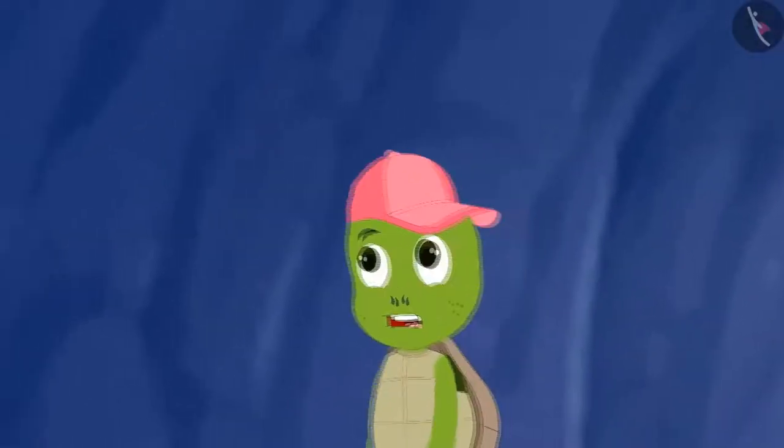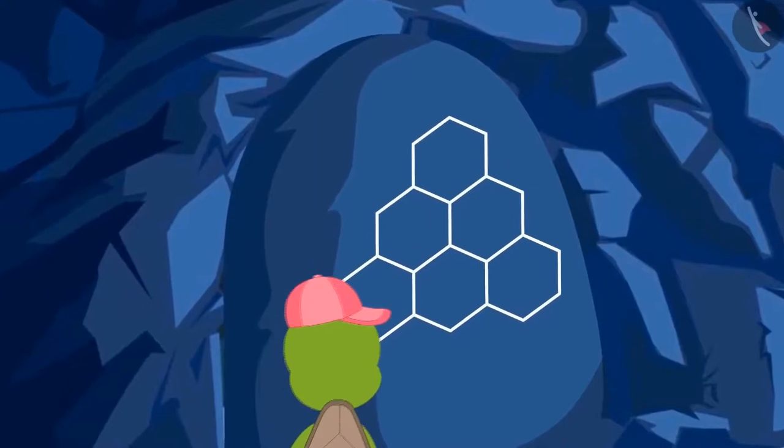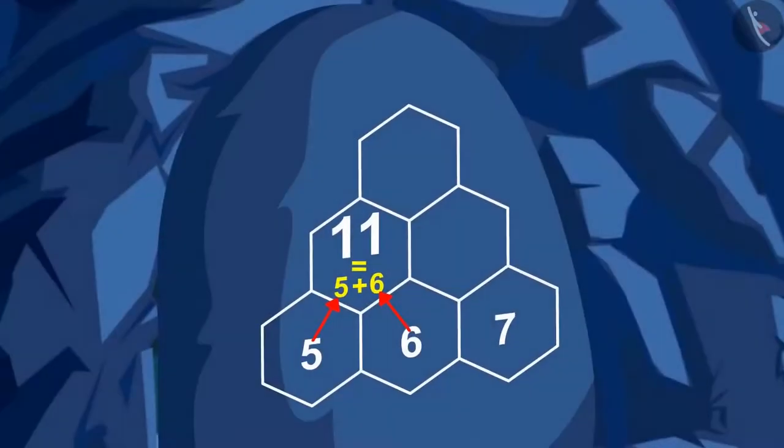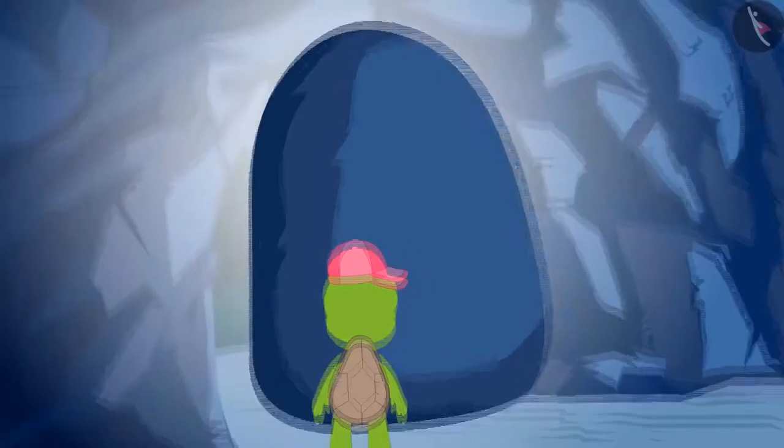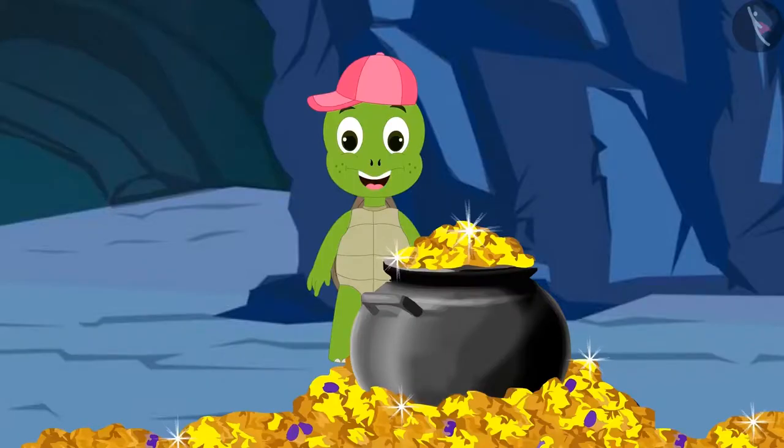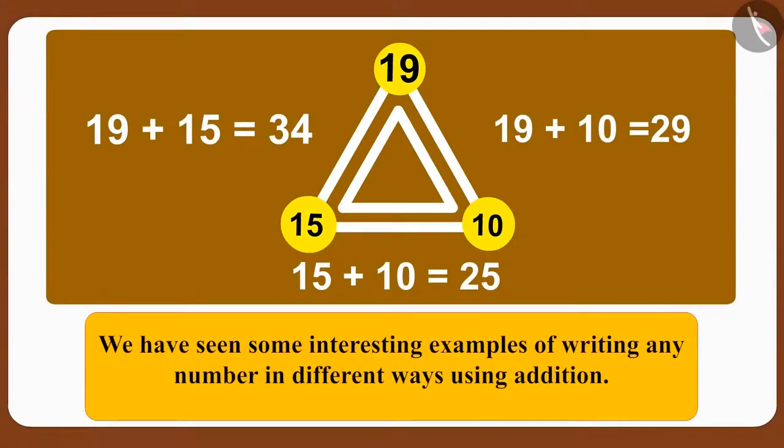Tufan started moving faster to reach the third door. At last, Tufan reached the third door. At the third and last door, Tufan saw this puzzle. Tufan has found the right answer to the puzzle. Now, you too, try to find the answer to this puzzle. The third door opened and Tufan found a lot of treasure. Children, in this lesson, we have seen some interesting examples of writing any number in different ways using addition. Stay tuned.